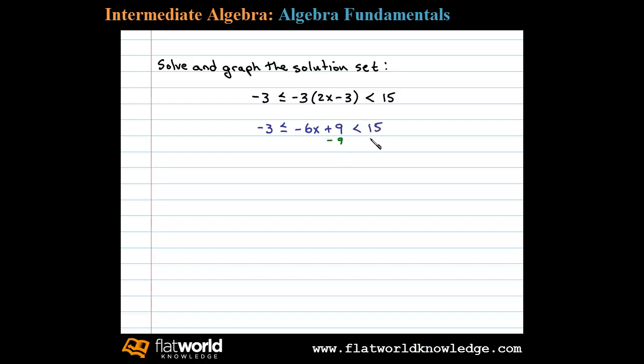This leaves us with negative 12 is less than or equal to negative 6x which is less than 6. Now at this point we need to divide all parts of the compound inequality by negative 6. Doing that, remember, reverses both inequalities and that leaves us with 2 is greater than or equal to x which is greater than negative 1.